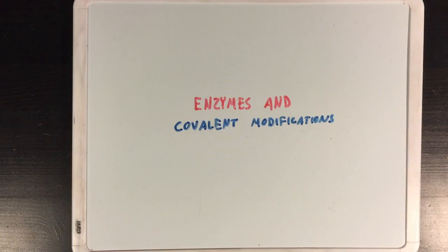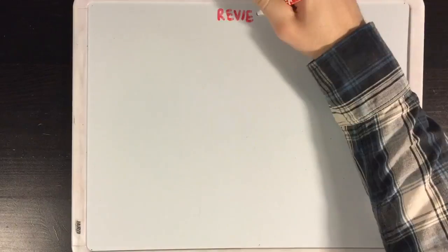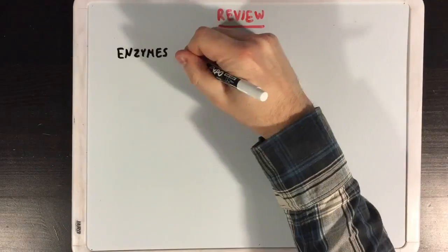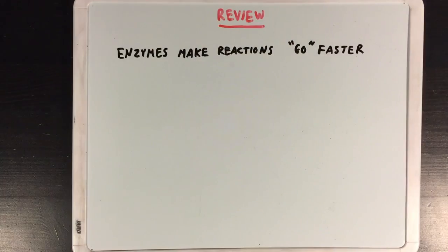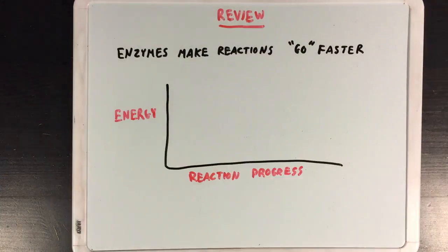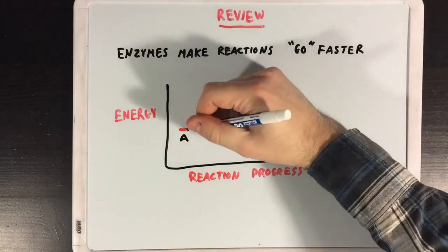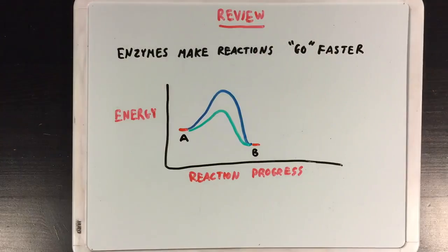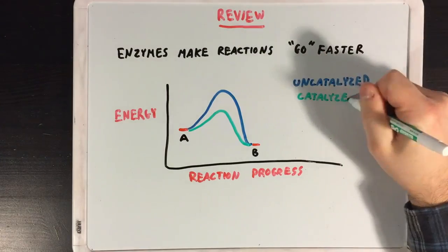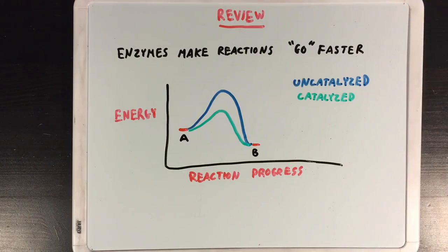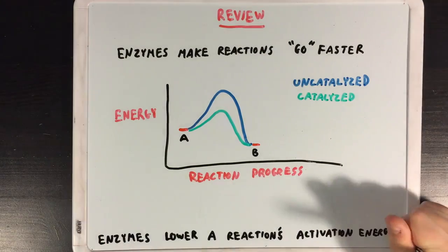Today we're going to learn about covalent modifications to enzymes. But first, let's review the idea that enzymes make reactions go faster. Looking at a reaction coordinate diagram, you'd notice that enzymes do this by lowering the reaction's activation energy.